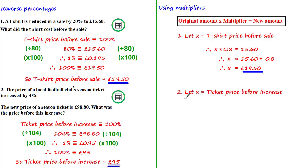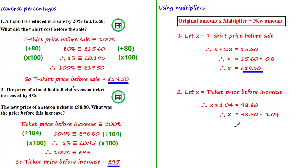We could have used the multiplier method for the second question as well. If we let x equal the ticket price before the increase, then using the equation: x times by 1.04 — the equivalent multiplier for a 4% increase — equals 98.80. To solve for x we divide both sides by 1.04 and get that x equals £95, exactly the same as before. I personally prefer the multiplier method as it can be a lot more efficient in some examples.